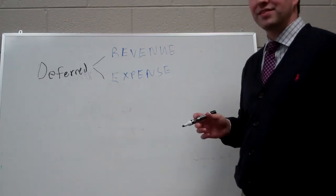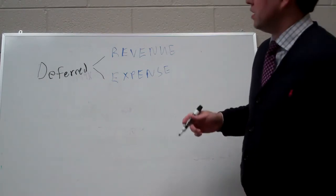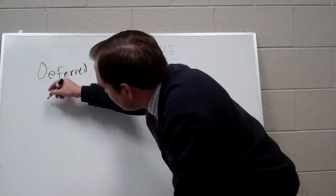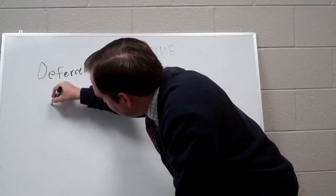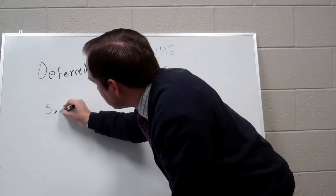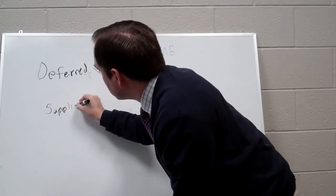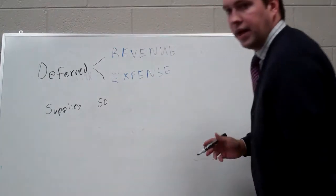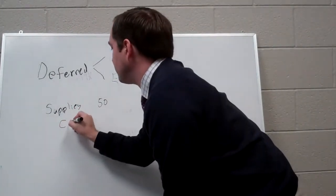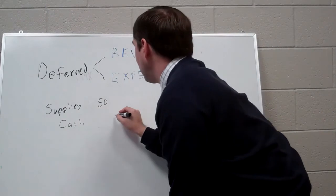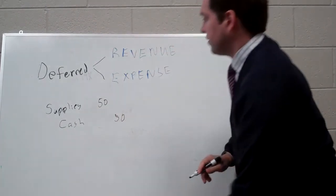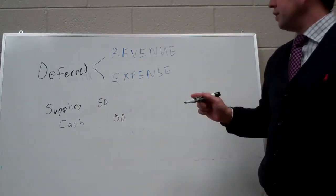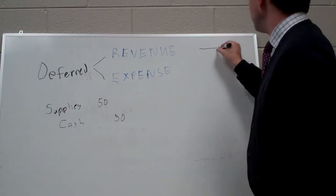So with office supplies, when we buy the supplies, we're going to debit supplies, which are an asset, let's say for $50. And we'll keep it simple, say we pay cash for them, so we credit cash for $50. And here's where it helps to look at the supplies T-account.